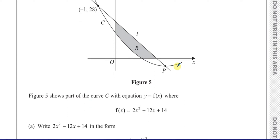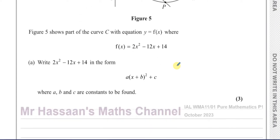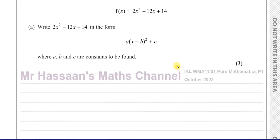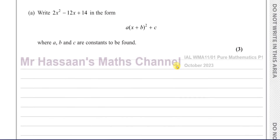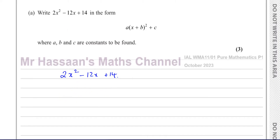Part a simply tells us to write 2x² minus 12x plus 14 in the form a(x + b)² + c, so we have to complete the square for this expression. We start off with the quadratic expression 2x² minus 12x plus 14. There are different ways that people do this — I prefer to focus on the first two terms.